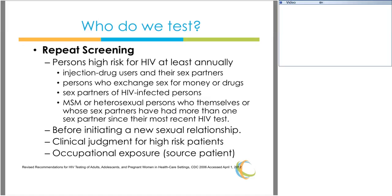Who else should we test, and what about repeat screening? Repeat screening should be done at least annually for patients who are at risk, including injection drug users and their sex partners, persons who engage in sex for money or drugs, anybody who has had a new partner or new sexual relationship within the past few months, men who have sex with men, or heterosexual persons who or whose sex partners have had more than one sex partner since their most recent HIV test. Of course, any time your clinical judgment suggests you should screen a patient for HIV infection, go ahead and do so.